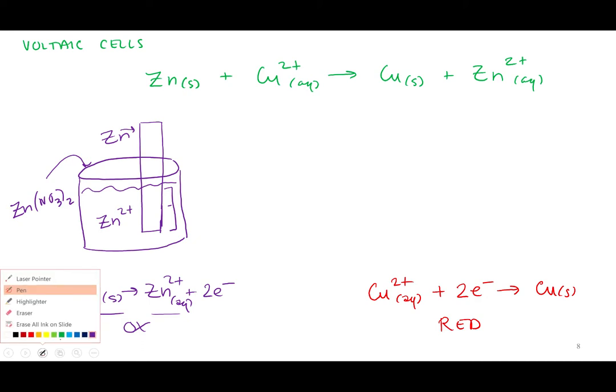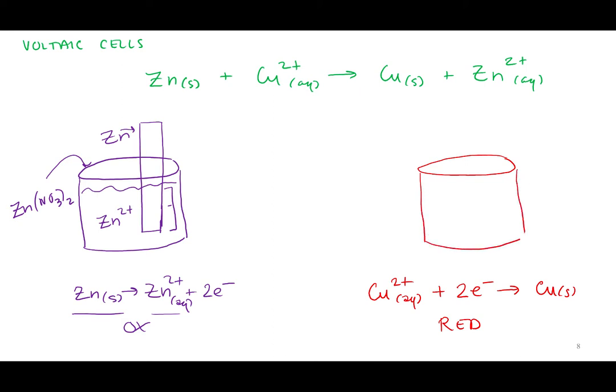Then over on the reduction side, we're going to do the same thing. We're going to need everything involved in the reduction half reaction. So we need some copper plus 2, so we're going to put in a soluble copper compound. Copper chloride. All right, I'll take it. Again, the anion is not going to do much. I personally would have went with copper sulfate, but that's okay. And then we need some copper.